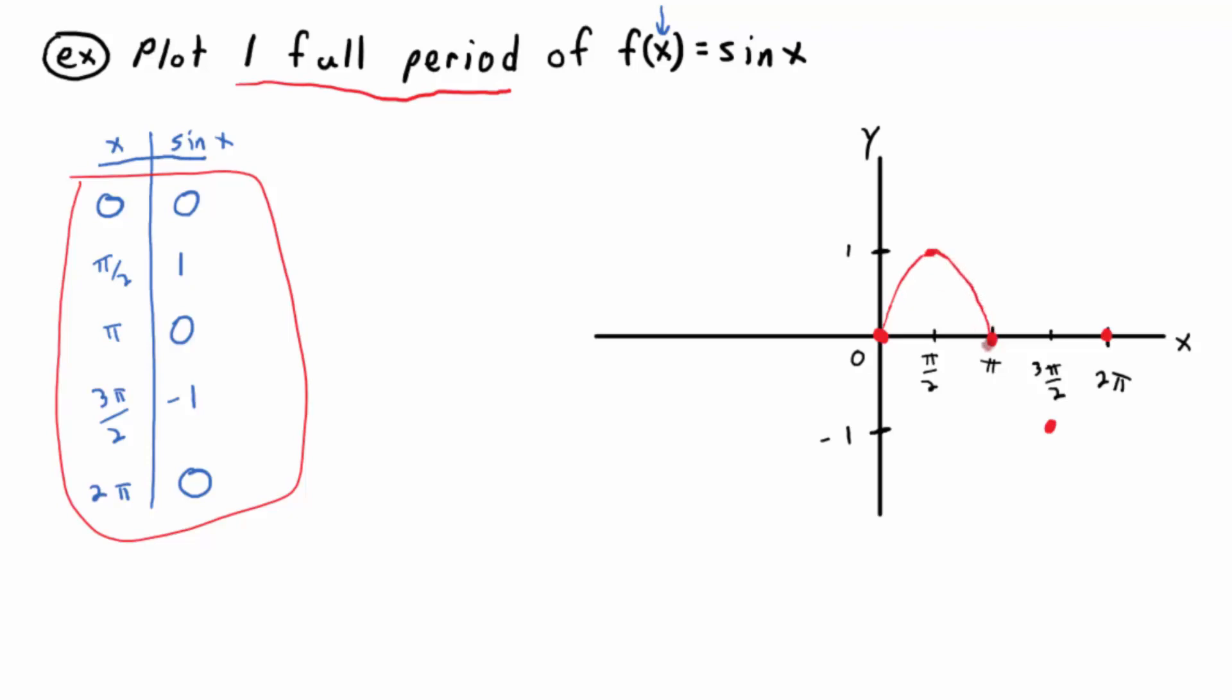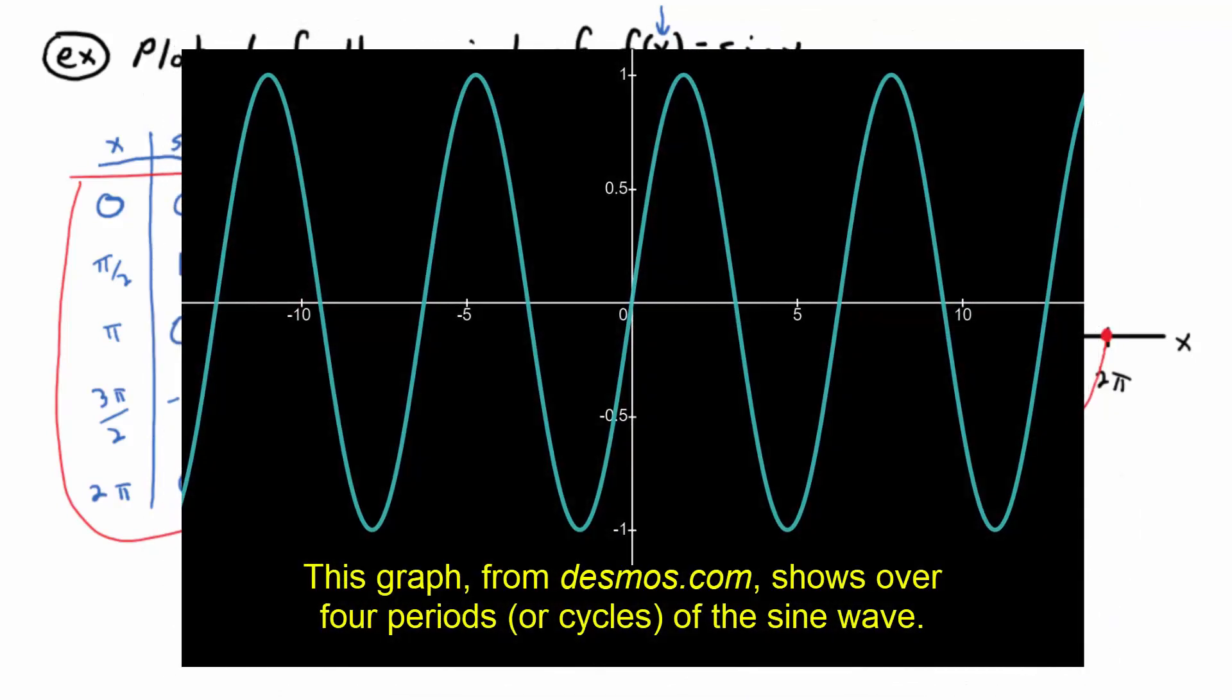This picture is going to repeat itself over and over again as you go to the right and as you go to the left. So this is just one period, and that period or cycle, that sine wave, repeats itself and looks the same out to infinity left and right.